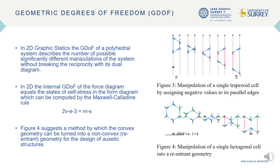In the case of a single trapezoid cell, the GDUF is 2. Any values can be given to the two parallel edges without breaking the reciprocity with its dual diagram. In particular, one can flip the parallel edges — or in other words, we can assign negative values to the parallel edges. Figure 4 suggests a method to create re-entrant faces using GDUF. We realized a hexagon as two trapezoids put together, and we manipulated the two trapezoids simultaneously, assigning negative edge lengths to all vertical edges.